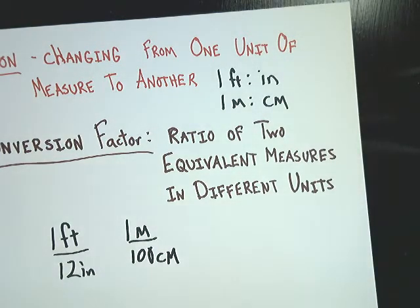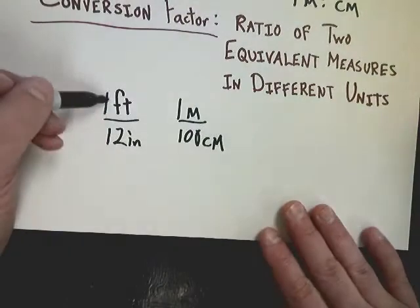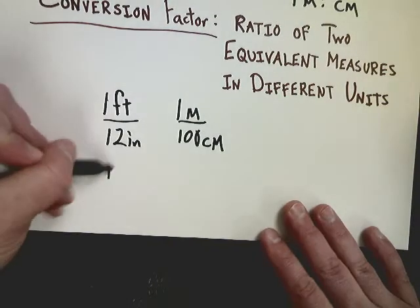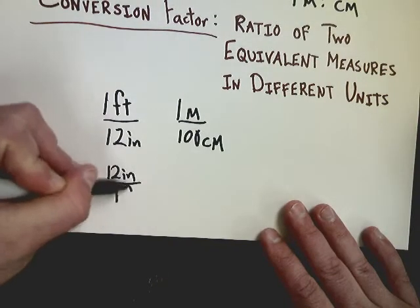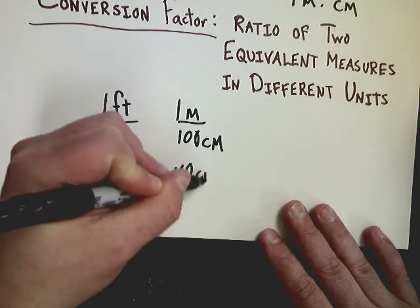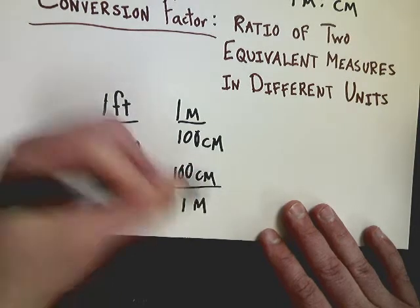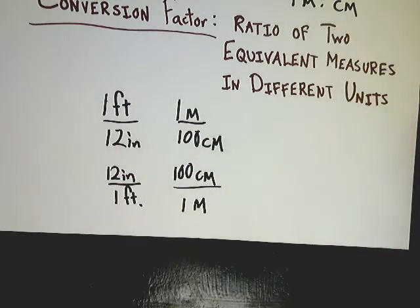Now the thing about conversion factors is that you can use them either way. One foot to 12 inches is the same if I put the inches on top. So I can use the same thing for 100 centimeters is one meter. Now I can use that to my advantage in the next section where we're going to talk about converting units.